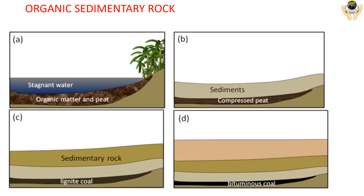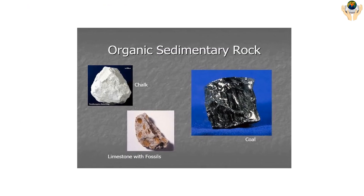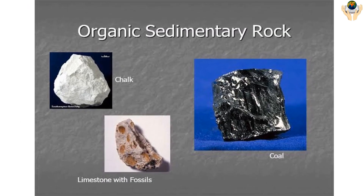Organic sedimentary rocks are made up of the skeletons and cells of sea animals. These remains collect on the ocean floor and eventually become cemented together. Coal is a type of organic sedimentary rock formed when decomposed plant material is buried beneath sediment and changed by increasing heat and pressure. Examples of organic sedimentary rocks include chalk, limestone with fossils, and coal.